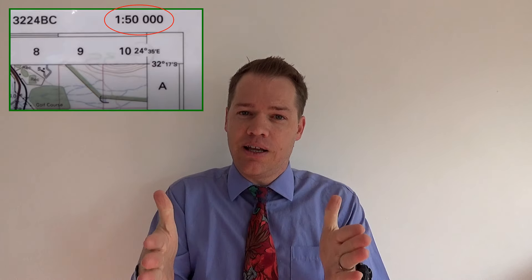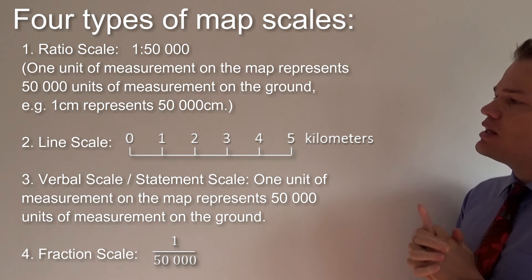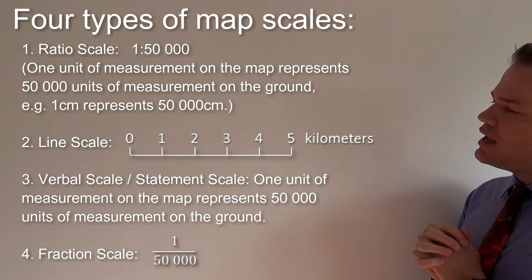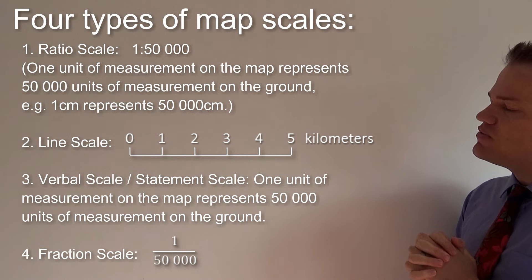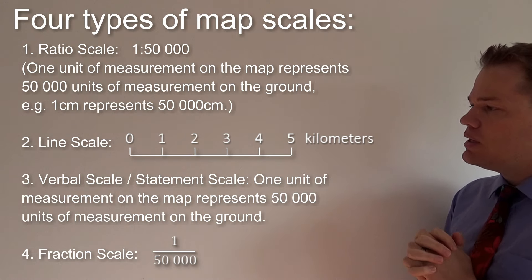Now that we know where north is, it's important to identify the map scale. A map scale tells you how many times a piece of land was shrunk so that it can be used as a map. On your screen you'll see examples of map scales: the one at the top is the ratio scale, the one below it is a line scale, below that is a verbal scale, and at the bottom is a fraction scale.